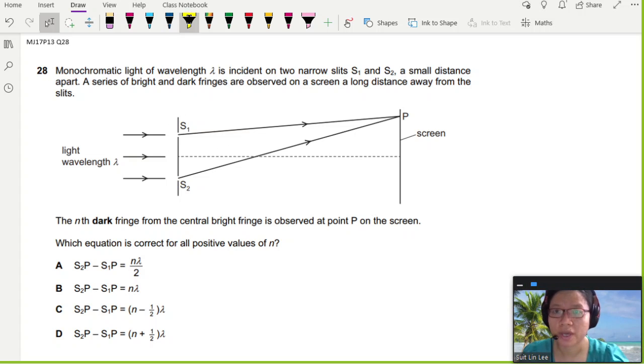This is a double slit question. We have a monochromatic light of wavelength lambda incident on two narrow slits S1 and S2, hence double slit interference from the superposition chapter, a small distance apart. Not given the distance. A series of bright and dark fringes, which is the interference pattern, are observed on the screen a long distance, so pretty far away from the slits. The nth dark fringe - see, dark is bold, so this is important information - from the central bright fringe is observed at point P. Which equation is correct for all positive values of n?